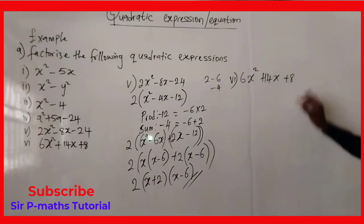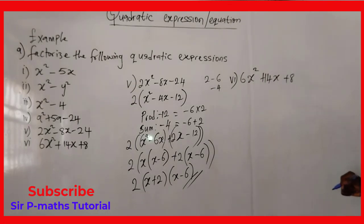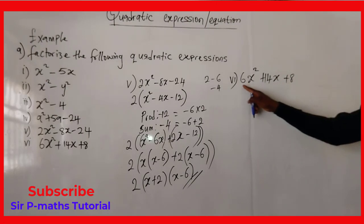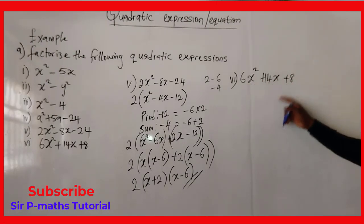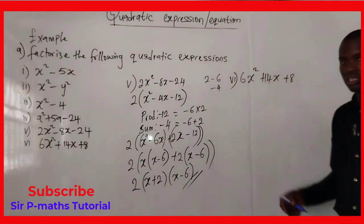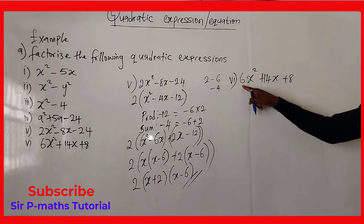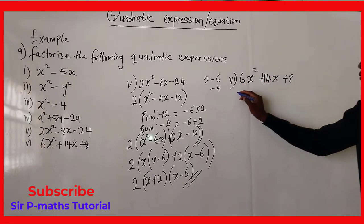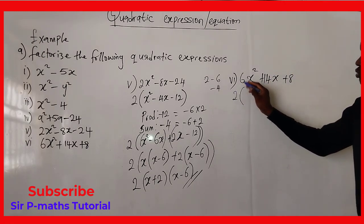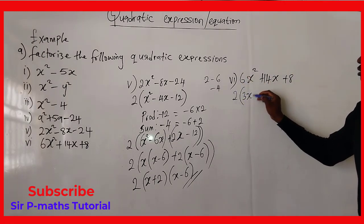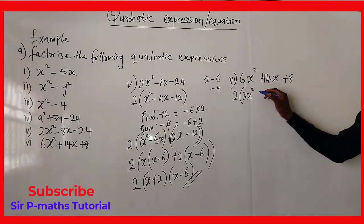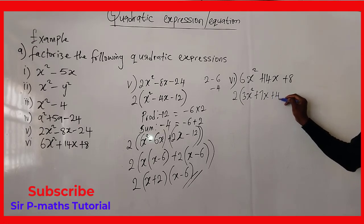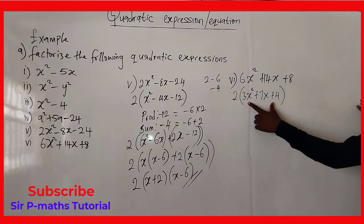For the last question, x² has a coefficient, so we first check for a common factor among all three terms. Since 2 is common to 6, 14, and 8, we bring 2 outside: 2(3x² + 7x + 4).